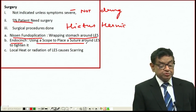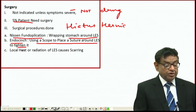Other procedures include EndoCinch, using a scope to place a suture around the lower end of the esophagus to tighten it, and local heat or radiation to cause scarring.